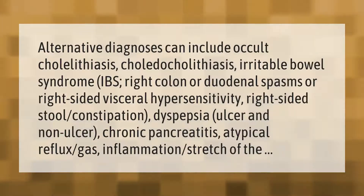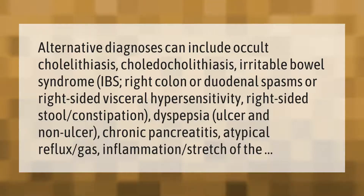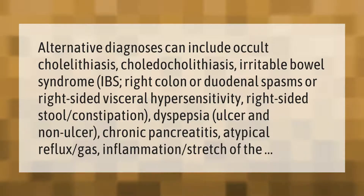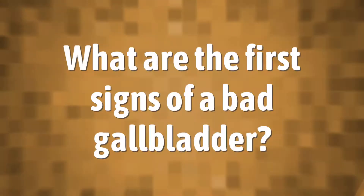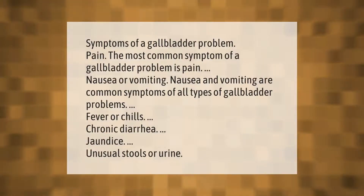Alternative diagnoses can include occult cholelithiasis, irritable bowel syndrome (IBS), right colon or duodenal spasms, or right-sided visceral hypersensitivity, right-sided stool constipation, dyspepsia, ulcer and non-ulcer, chronic pancreatitis, atypical reflux, and gas inflammation.